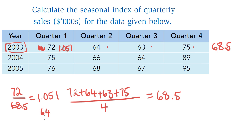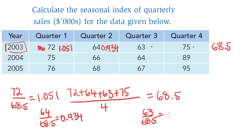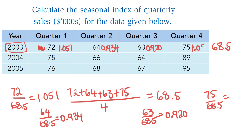Going along for the other results: 64 divided by 68.5 gives 0.934 — and because 64 is less than 68.5 I was expecting zero-point-something. 63 divided by 68.5 gives 0.920, and 75 divided by 68.5 gives 1.095.